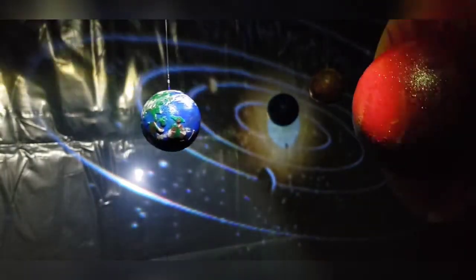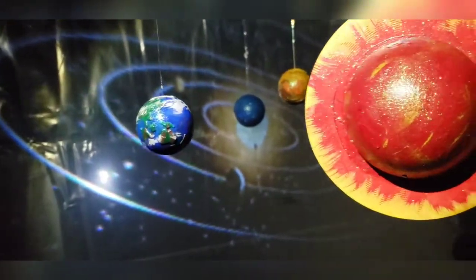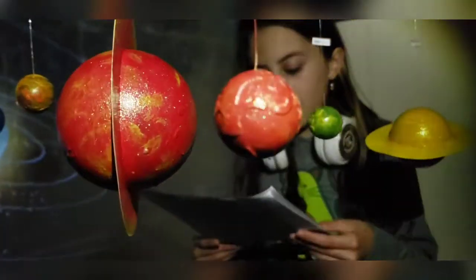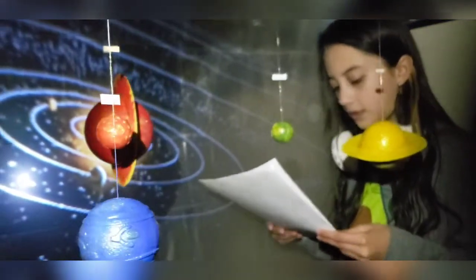Sun. It takes 8 minutes and 20 seconds for sunlight to reach planet Earth. Earth is made of rock and minerals like magnesium and aluminum.